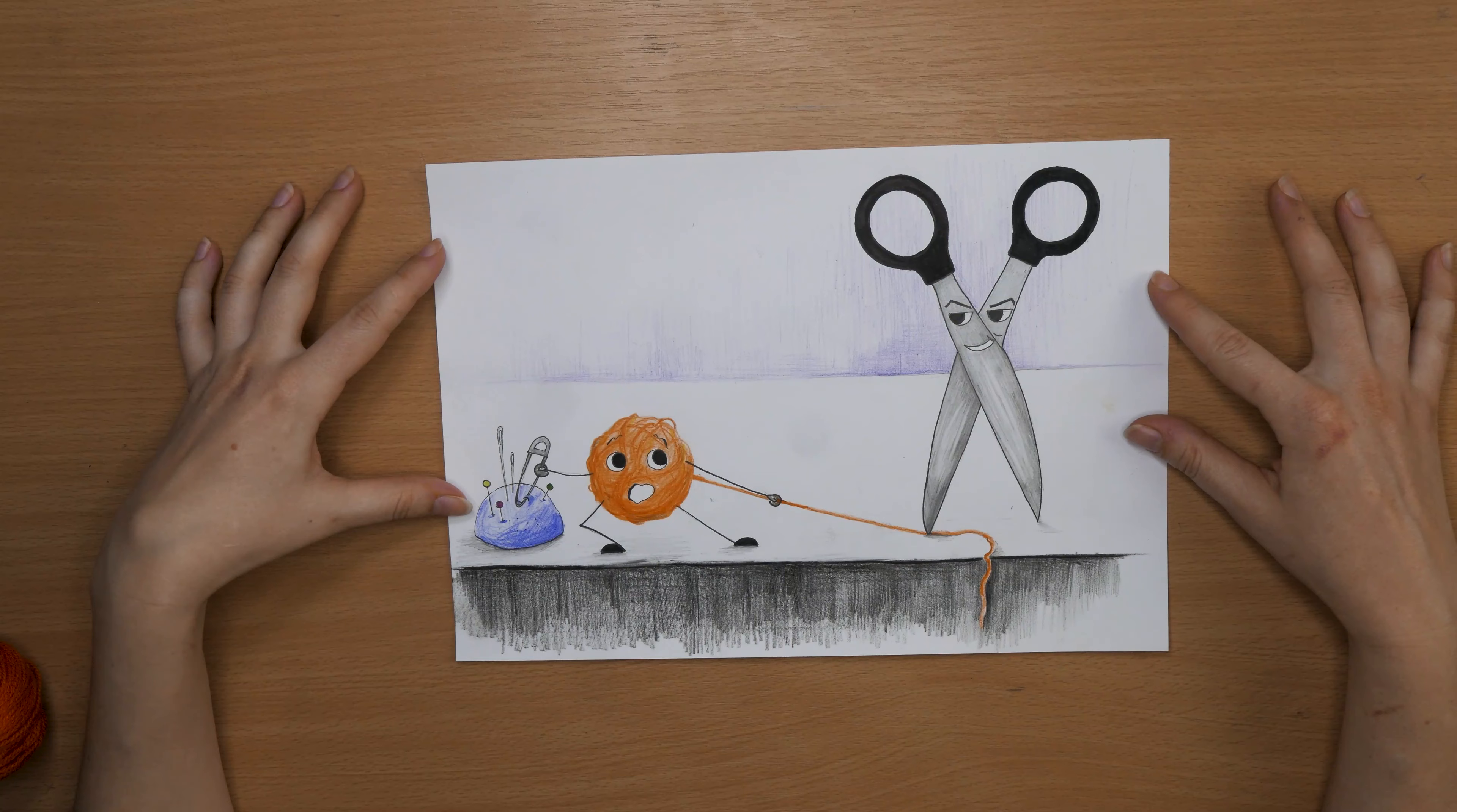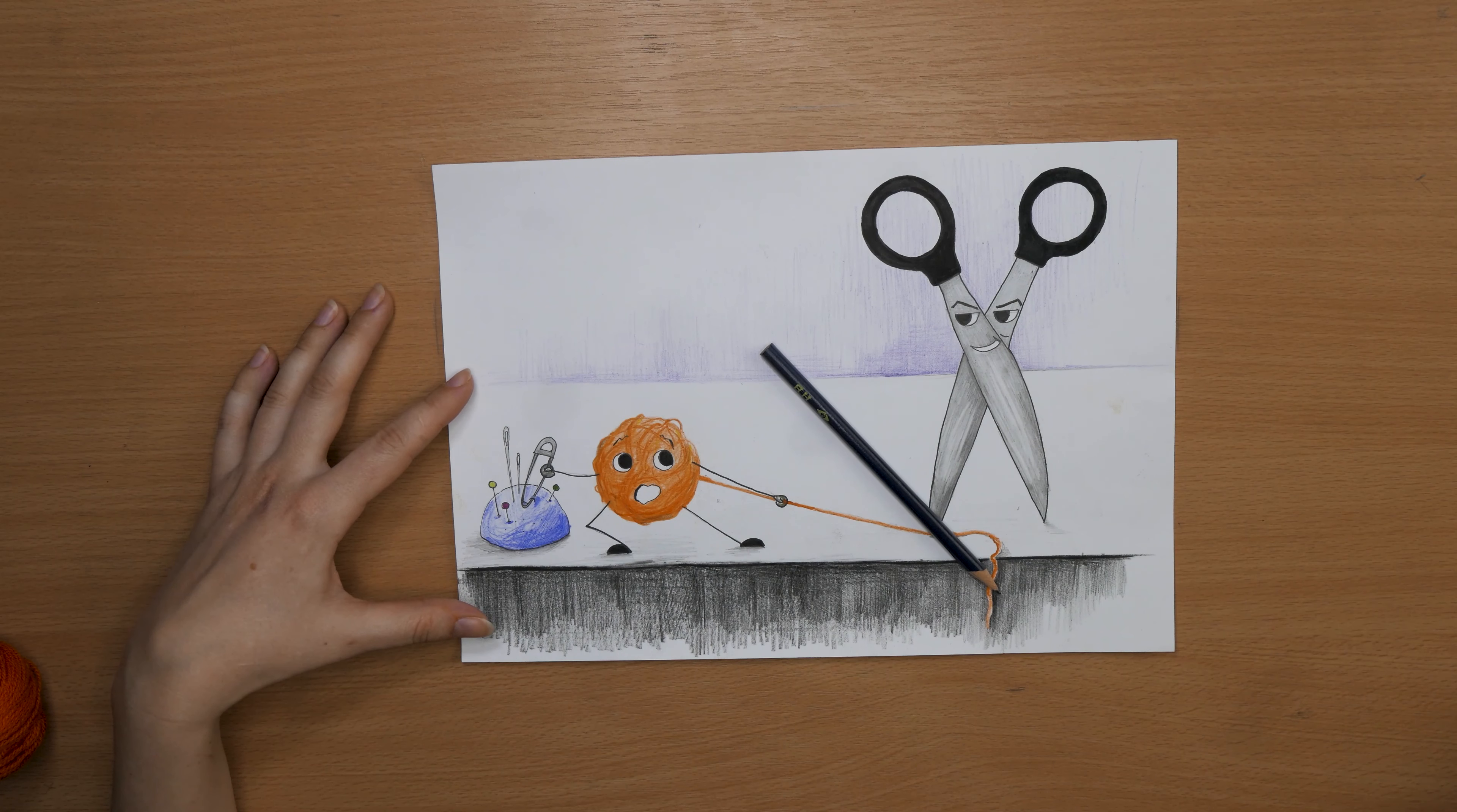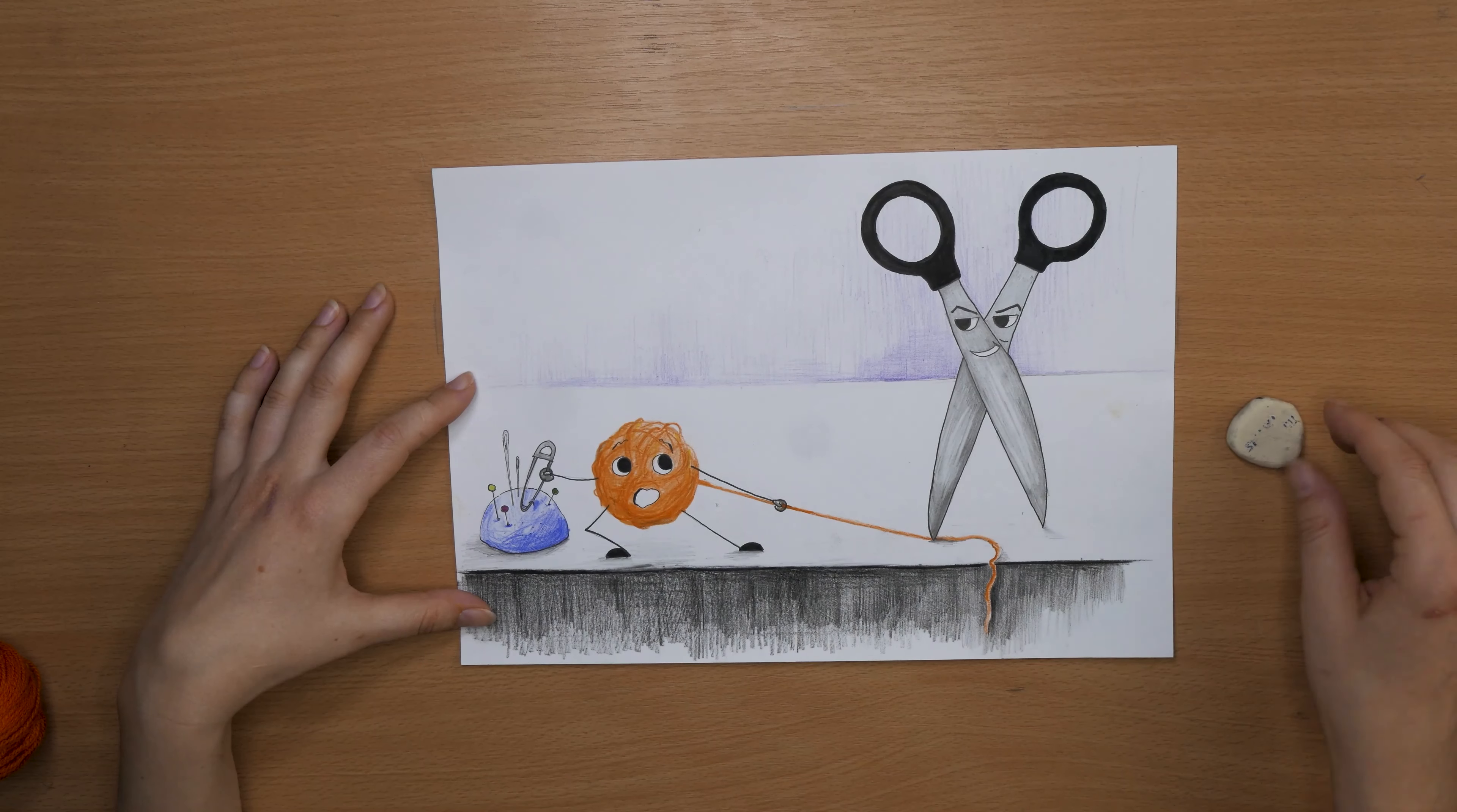The objects I chose for this example are a ball of yarn and a pair of scissors. This is the example I made for you today. I created an interaction between the two characters and I used crayon, colored pencils, liners, colored liners, and of course an eraser.